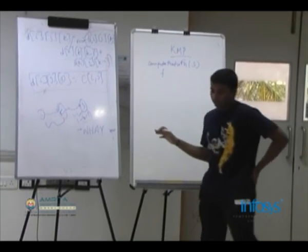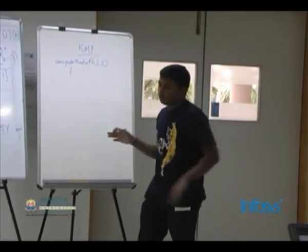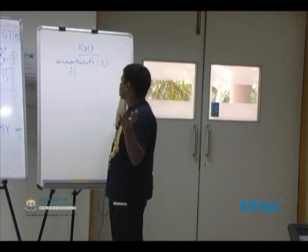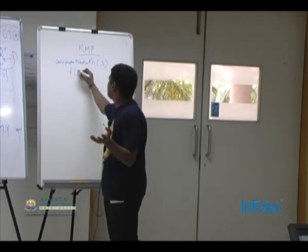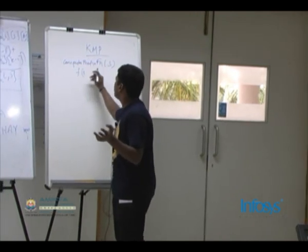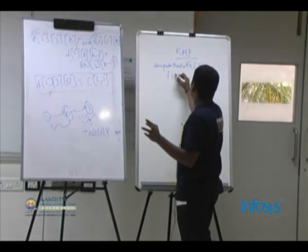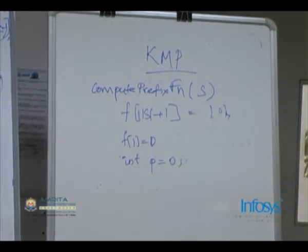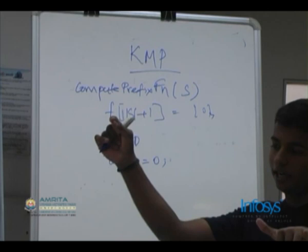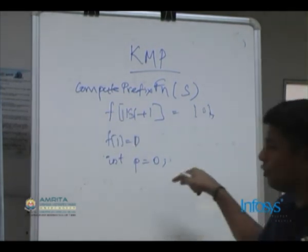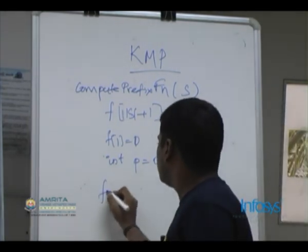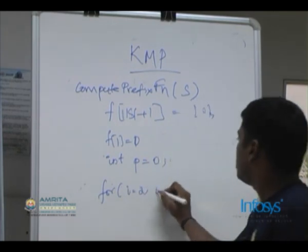Just for clarity, to avoid off-by-one errors, I'm assuming the string is 1-indexed. It is an exercise to convert this to 0-indexed. I have an array f indexed from 1 to |s|+1. I maintain a counter p as my invariant — p always holds the length of the longest prefix that is also a suffix up to the current position. Initially p = 0, since for one character the answer is zero. Then I loop from i = 2 onwards.